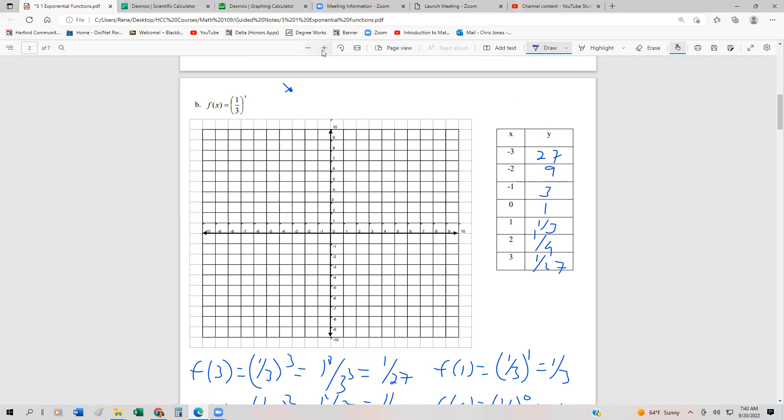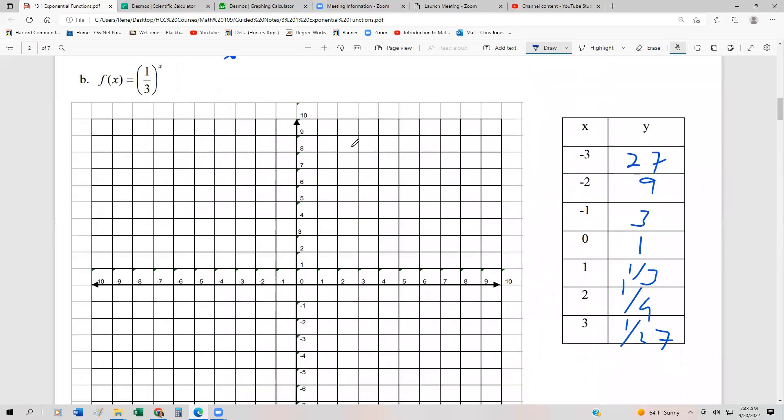All right, two comma nine, zoom in a lot, just so that way I can plot these points. So negative two, nine, it's going to be right about here. And then we have negative one, three, our stationary point on the axis is going to be our zero, one.